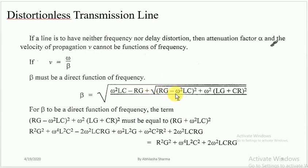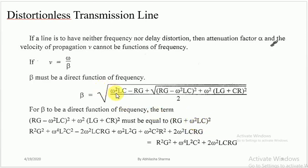When we put this condition, the term RG cancels with RG, and ω²LC cancels with ω²LC, leaving 2ω²LC. After putting this condition, beta becomes a simple function of omega. The phase velocity V = ω/β, and after substituting, omega cancels out, so the velocity becomes constant — free from frequency.